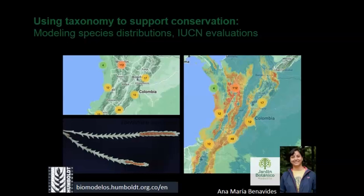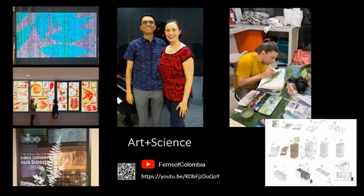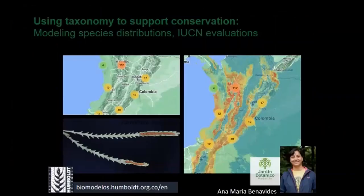Returning to the last aim of the project — how do you accelerate the pace of taxonomy and lineage discovery? You need to start collaborating with the community and folks involved in conservation. We're using taxonomy to support conservation, working with Ana Maria Benavides, leader of conservation at the Medellin Botanic Garden, as well as the Biomodels Group at the Humboldt Institute, who are evaluating the conservation status of epiphytes in Colombia. Our team selected 60 ferns that we, as taxonomists, can identify, since records on GBIF need a lot of curation. We hope to expand to all the ferns in Colombia.